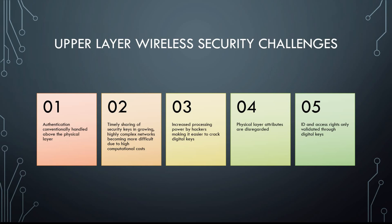Currently, in today's networks, most of the security measures take place at the upper layers of the security model. Authentication is generally handled above the physical layer. Timely sharing of security keys is growing in highly complex networks and it's becoming more difficult due to the high computational costs. Hackers are getting increased processing ability and that makes it easier for them to crack these digital keys, which previously had been thought to be unbreakable. Generally, physical layer attributes are disregarded. Identification and access rights are generally only validated through digital keys and not done through any physical layer means.